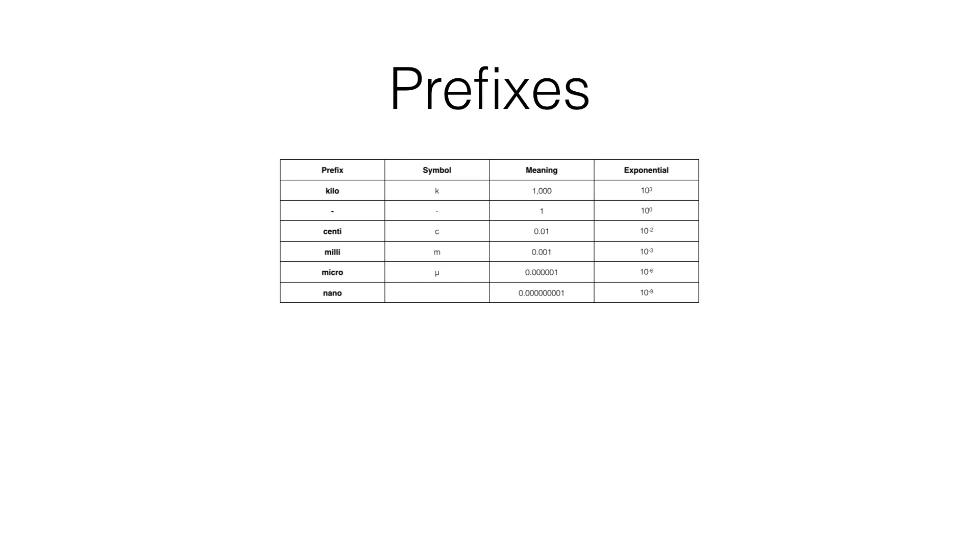By placing the prefix in front of the base unit, that means you have a certain number of that base unit. For example, kilo means a thousand, or ten to the third power. Therefore, a kilo unit, such as a kilogram, means you have one thousand grams.